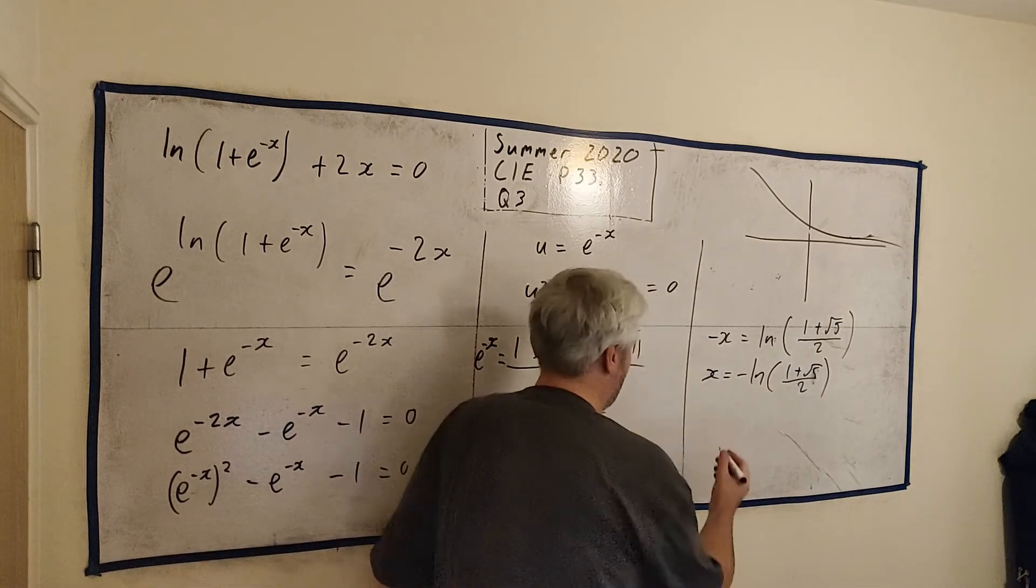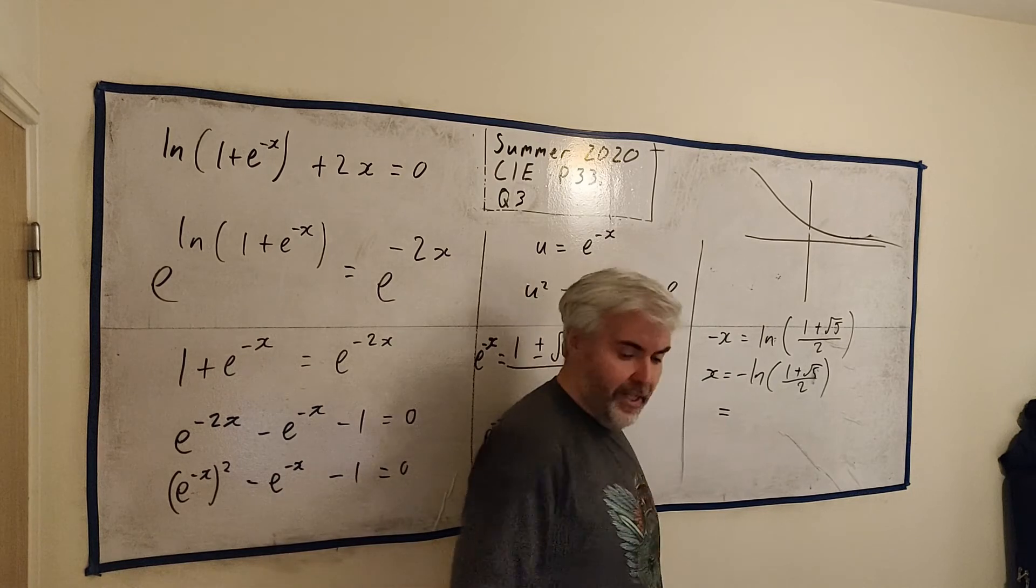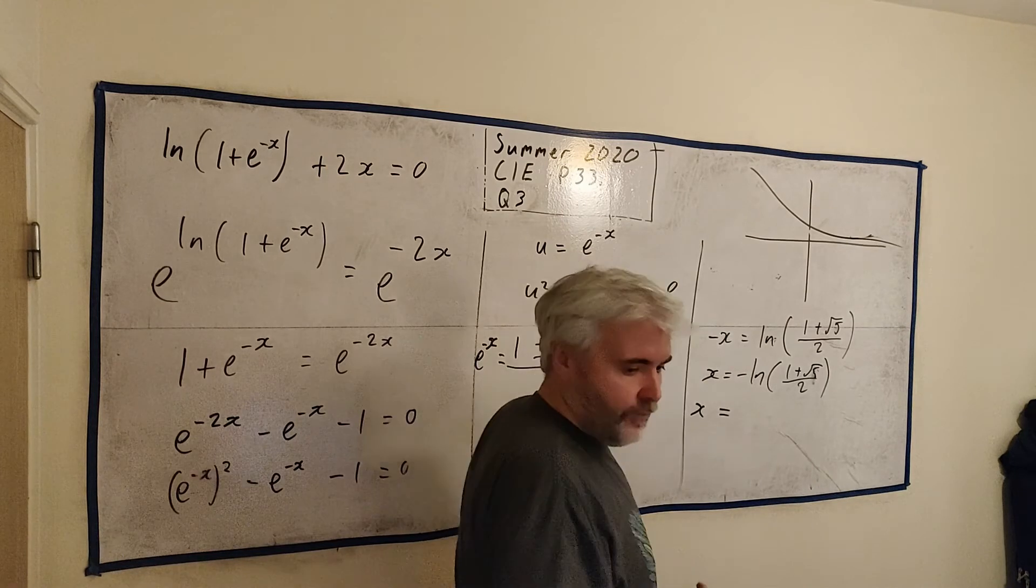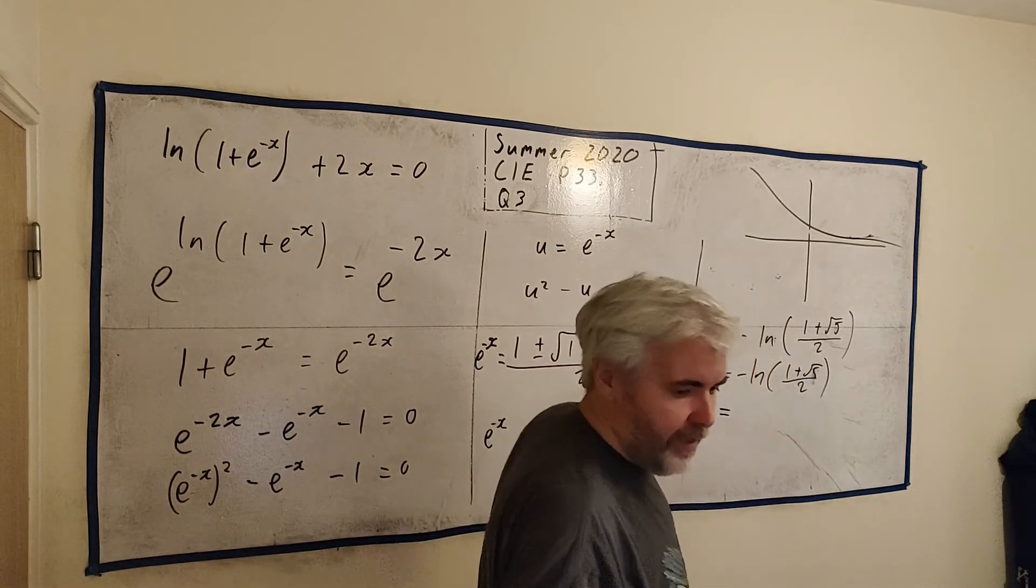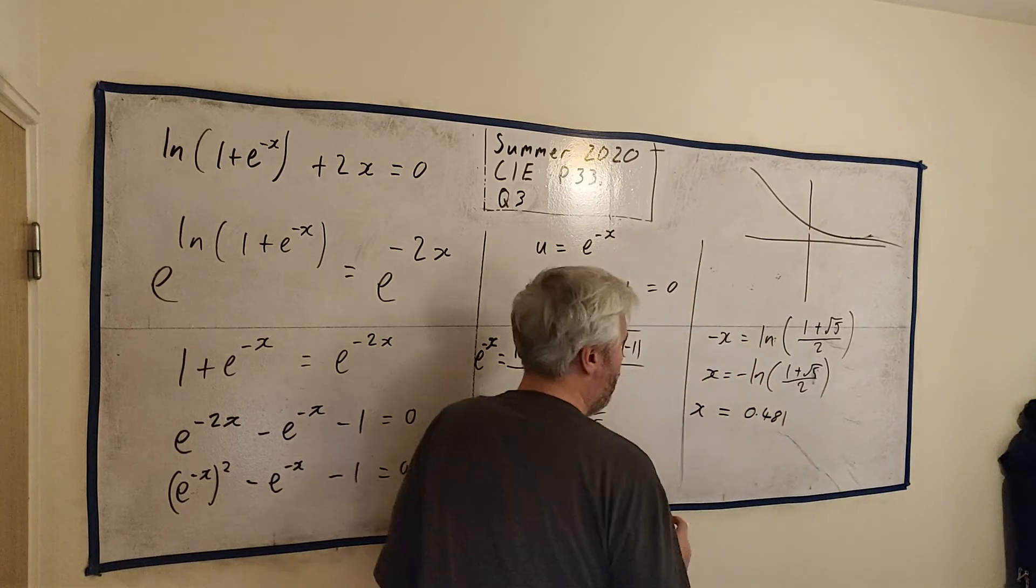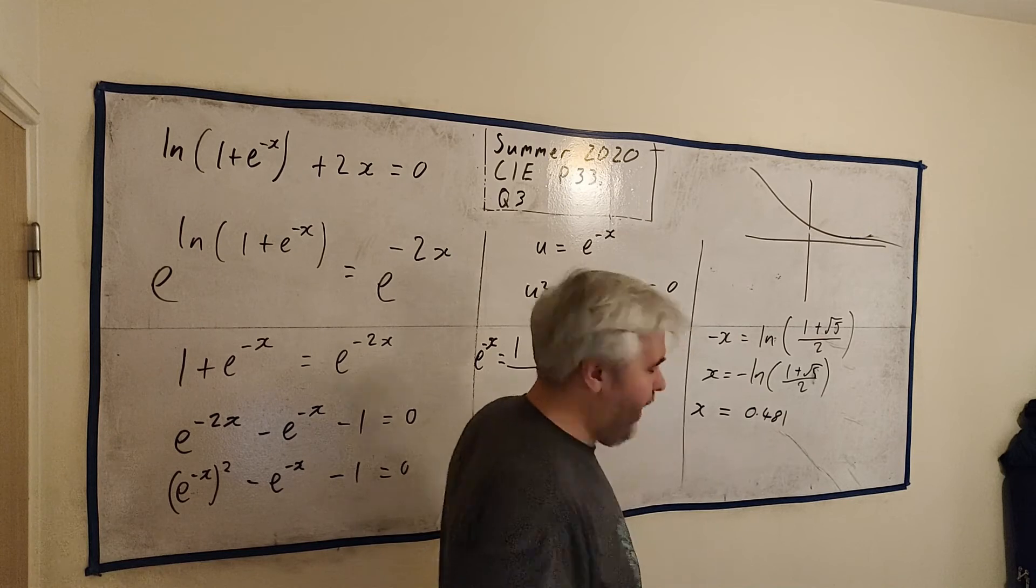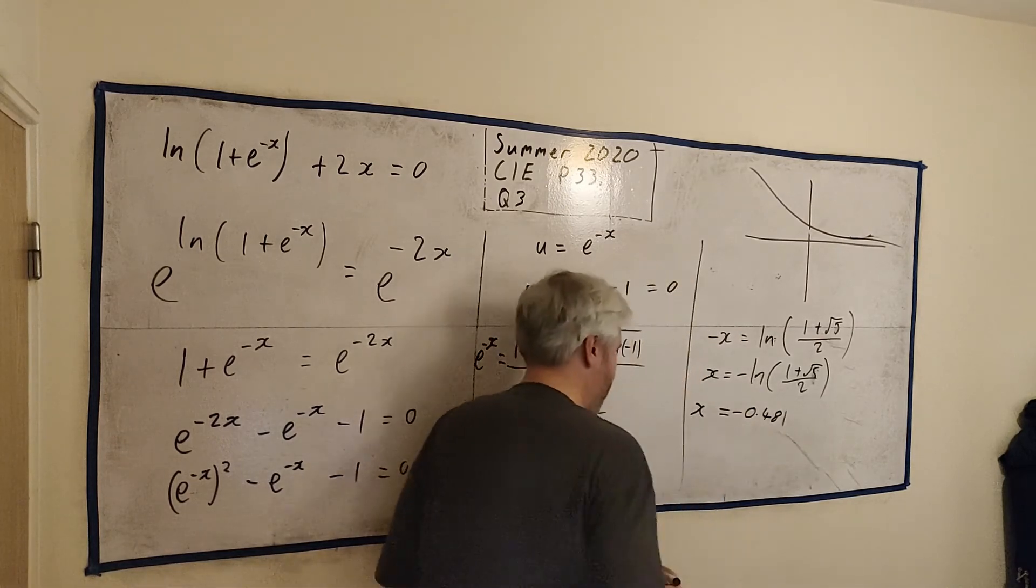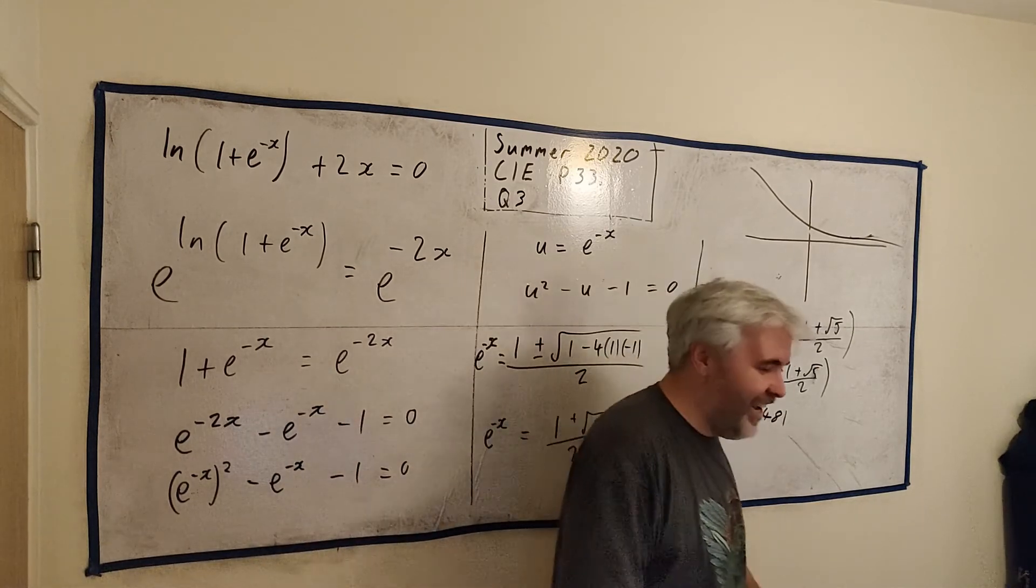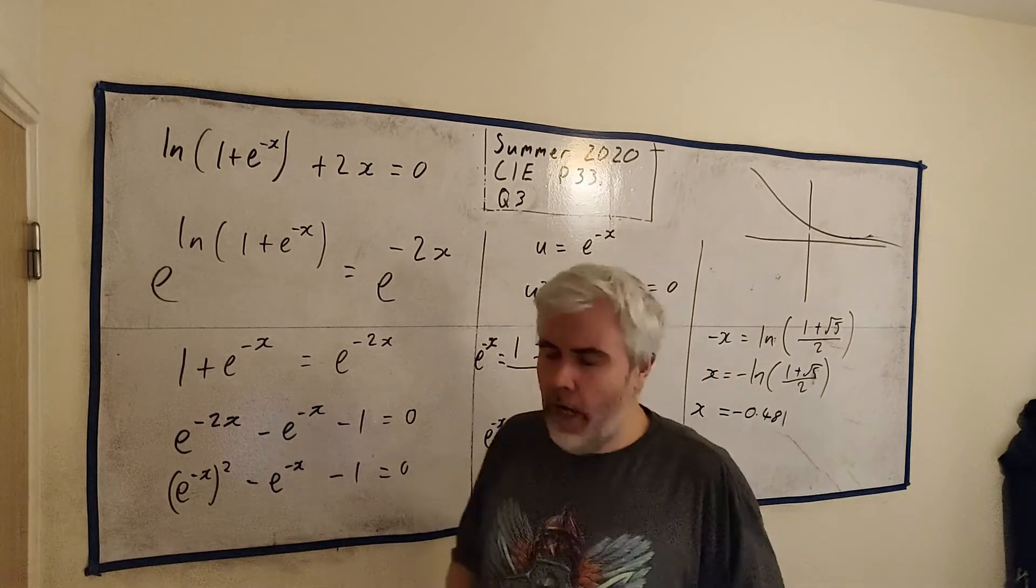Put that in a calculator and you'll get your, because they did ask for three decimal places. Put that in a calculator. You'll get x is equal, I've done this out already. Actually, I'm getting 0.481, but I'm nearly sure that should be a minus. I wrote it down wrong. Yeah, I'm fairly sure that'll be a minus. If it's not, I'm going to edit this out and you'll never see. So it must be a minus and I forgot to write it down on my notes.